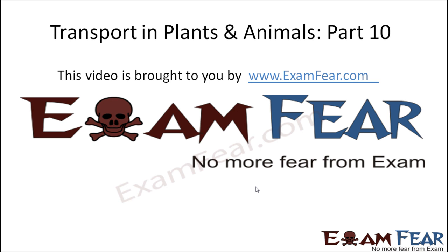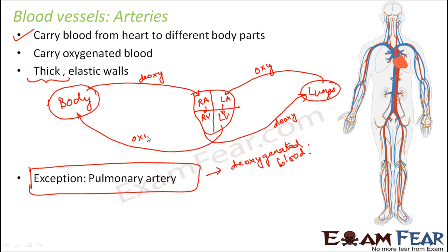Hello friends, this video on transport in plants and animals part 10 is brought to you by ExamFear.com — no more fear from exam. You have oxygenated blood flowing from the heart to different parts of the body, and in this route it is all carried by arteries. So arteries carry oxygenated blood from the heart to different parts of the body.